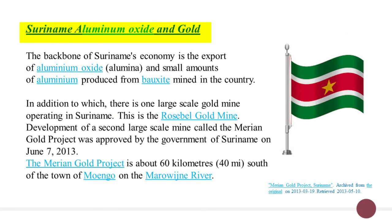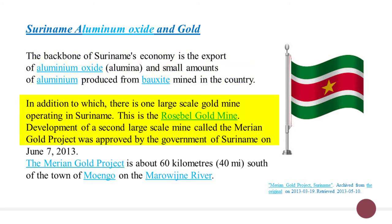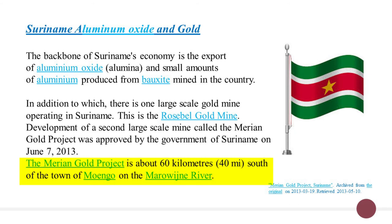The backbone of Suriname's economy is the export of aluminum oxide, also known as alumina, and a small amount of aluminum produced from bauxite mined in the country. In addition, there is one large-scale gold mine operating in Suriname — the Rosebel Gold Mine. Development of a second large-scale mine called the Merian Gold Project was approved by the government of Suriname on June 7, 2013. The Merian Gold Project is about 60 kilometers south of the town of Moengo on the Marowijne River.